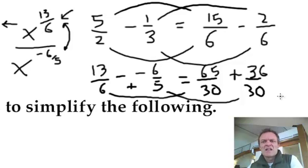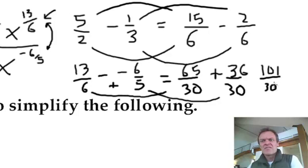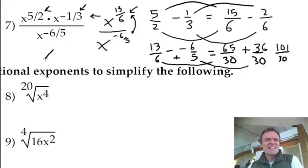Ooh, what's that, flipping heck? 101, 101, is that right? 65 and 36 is 101 over 30. Then, folks, that's the answer. The answer is x to the power of 101 over 30.